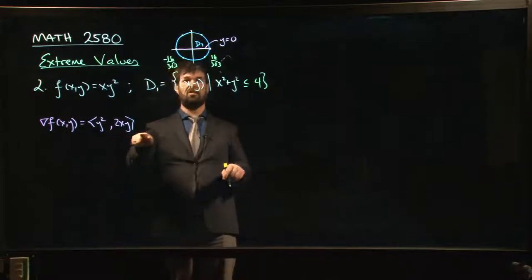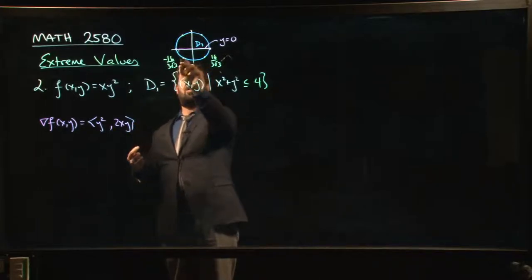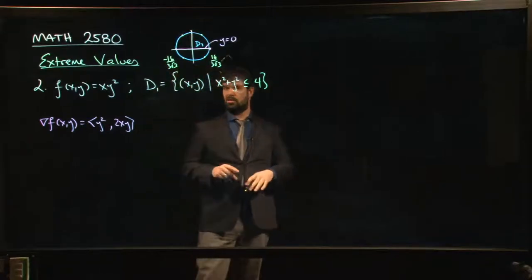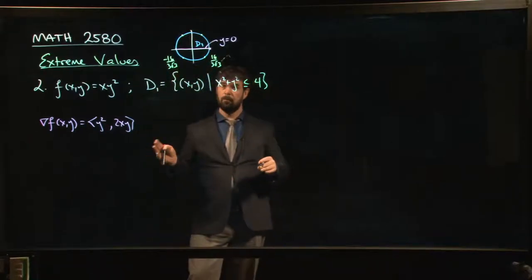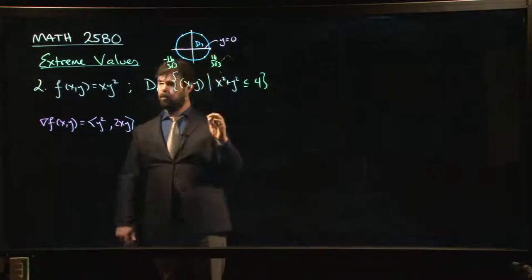We found that this was a strange example because the critical points weren't just a single point or isolated points on the interior, it was actually a whole line's worth of critical points. Nonetheless, you can look at the values along that line, they were all zero. Then you look to see what happens along the boundary.